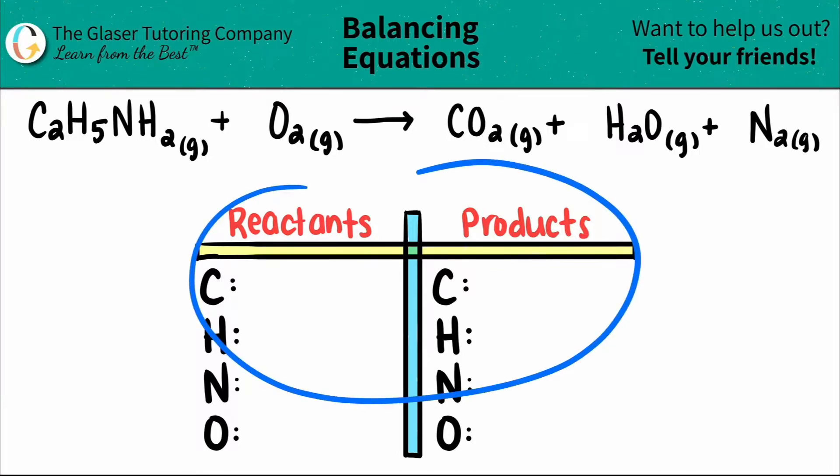I already wrote down our chart and all the elements that I see that are the same on both the reactants and the product side, aka the left and the right side. All we have to do now is just write down how many total we have.